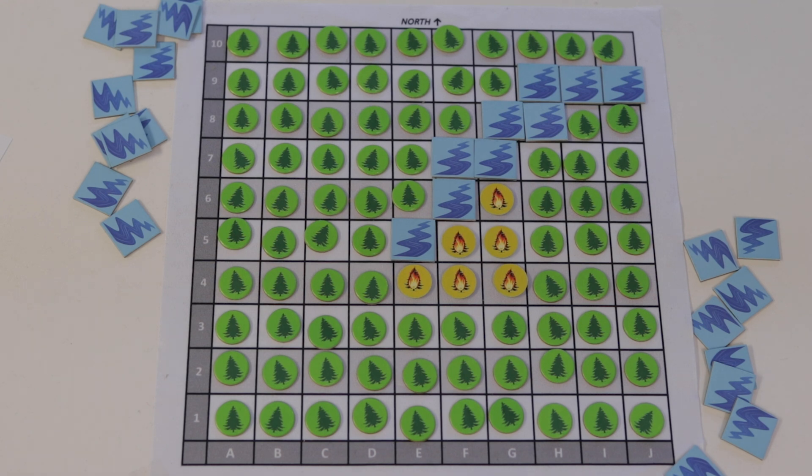So if there's a narrow part of the river, as seen here where two water tokens are touching corner to corner, the fire is able to jump the river diagonally and continue to burn above.